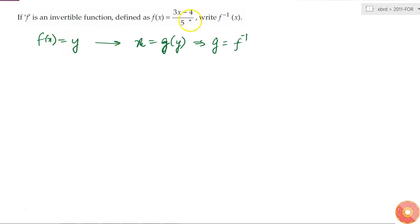I have taken f(x) is equal to y. That means y is equal to (3x minus 4)/5. If I multiply both sides by 5, this means that 5y is equal to 3x minus 4.